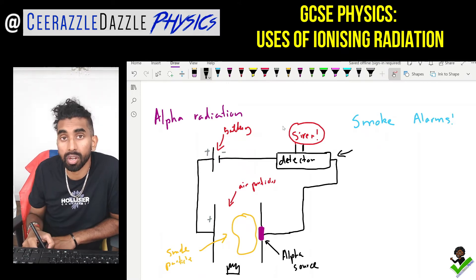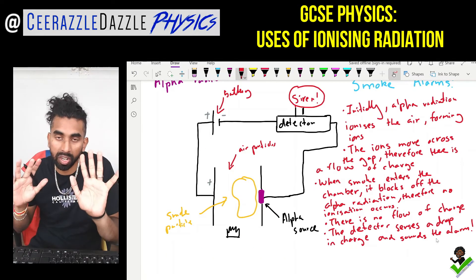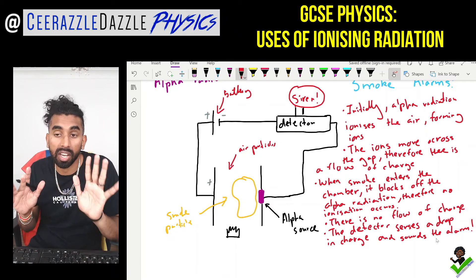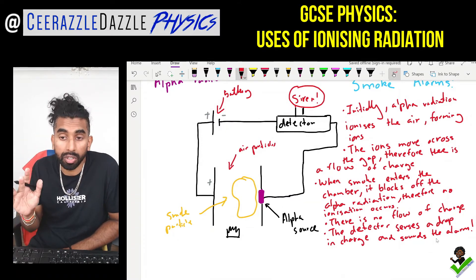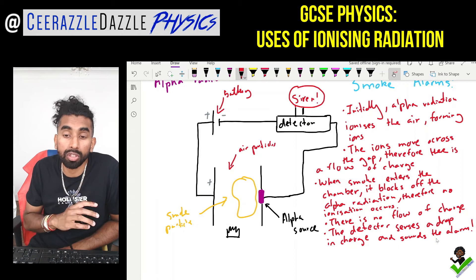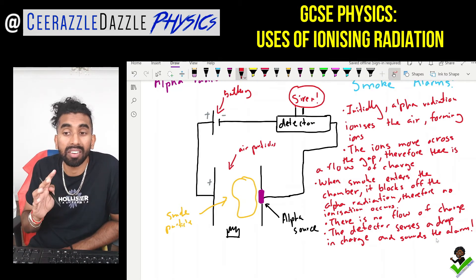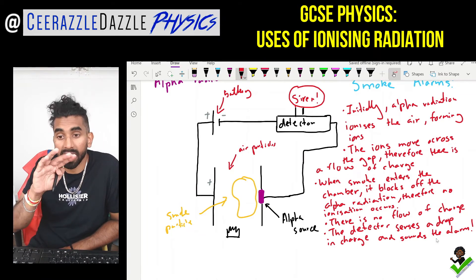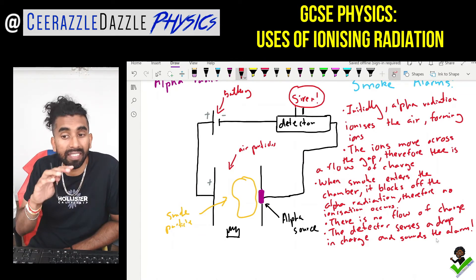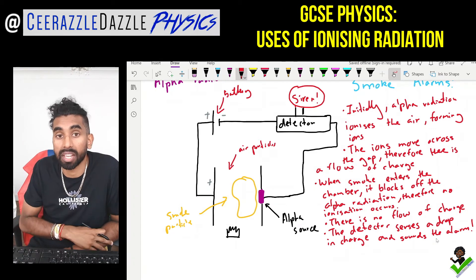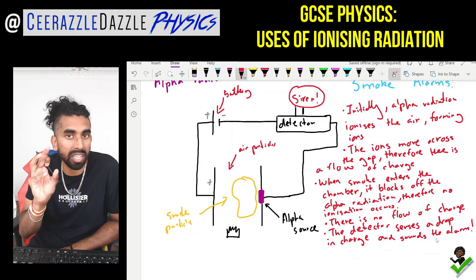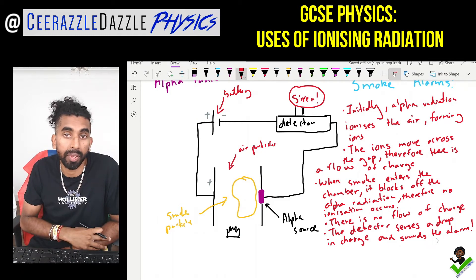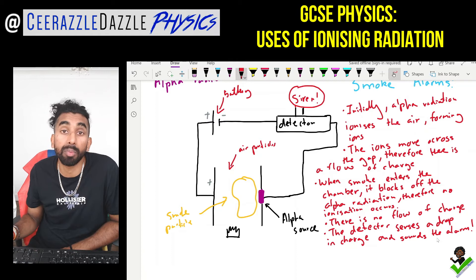To summarize: initially, alpha radiation ionizes the air, forming ions. The ions move across the gap, creating a flow of charge. When smoke enters the chamber, it blocks the alpha radiation, so no ionization occurs and there is no flow of charge. The detector senses a drop in charge and sounds the alarm. Make sure you understand what the smoke is doing and what the alpha radiation is doing.